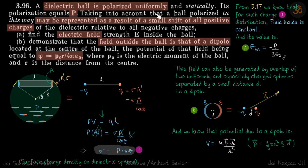Taking into account that a ball polarized in this way may be represented as a result of a small shift of all positive charges, find the electric field inside the ball and demonstrate that the field outside is that of a dipole located at the center.